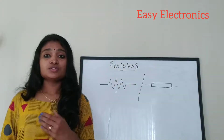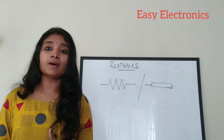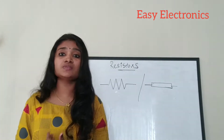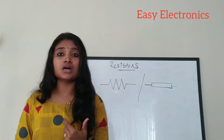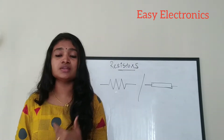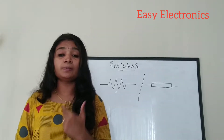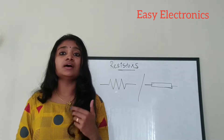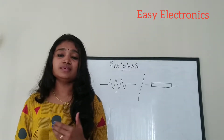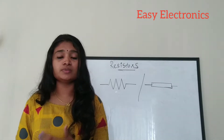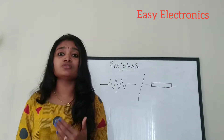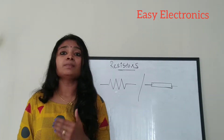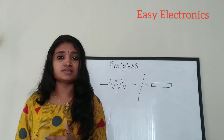I mentioned that a resistor is a passive electronic component. Components which are capable of generating electrical energy or electrical power on their own are called active components — for example, a transistor is an active component. A resistor is a passive component because it is not capable of generating electrical energy or power on its own.